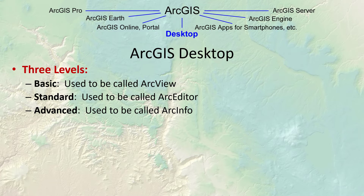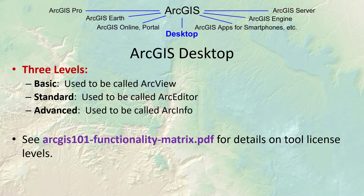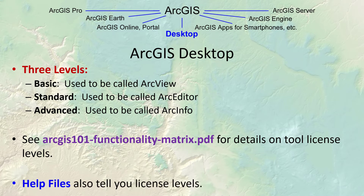Basic — which used to be called the ArcView level — lets you do almost everything you want to do. Standard lets you get into more fancy database functions. Advanced has a few of the really advanced analytical tools. We have a document called the ArcGIS functionality matrix — I have a version for 10.7 in your documents folder. It shows you the tools and what license levels they are available at, and all the tools also have help files that will tell you what license level they require.